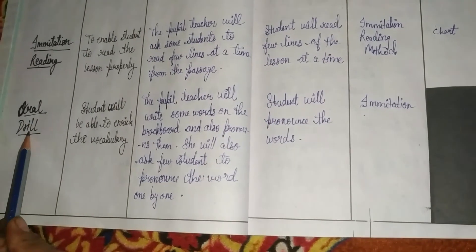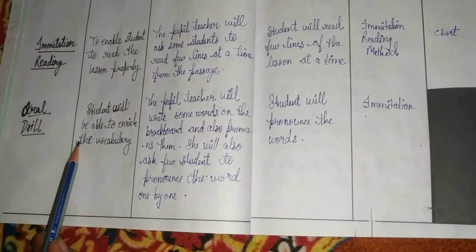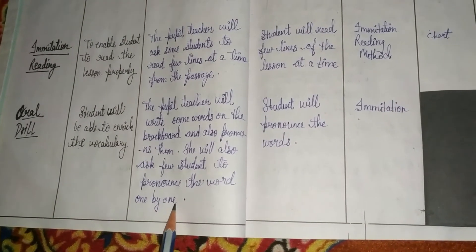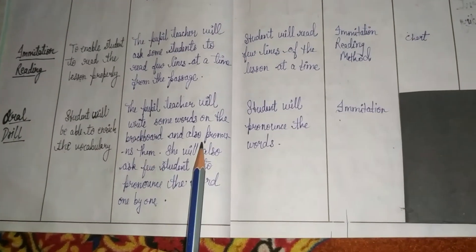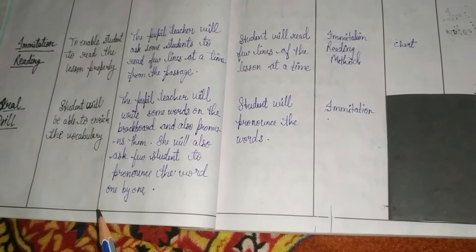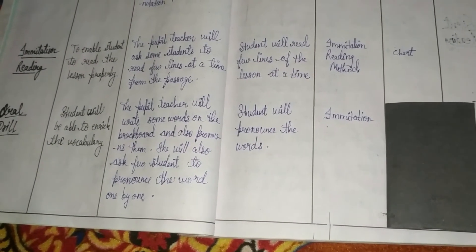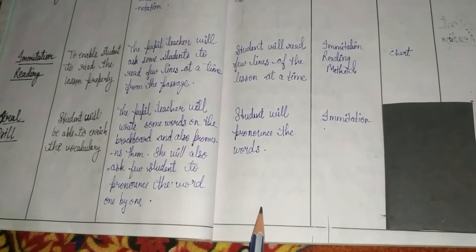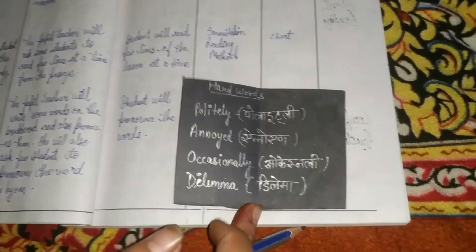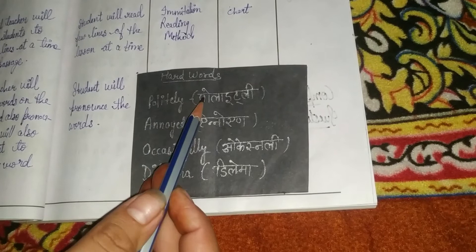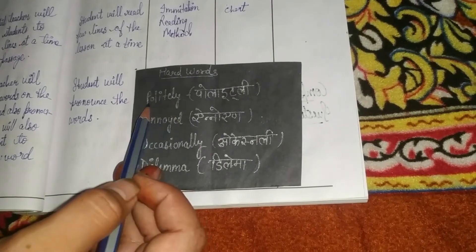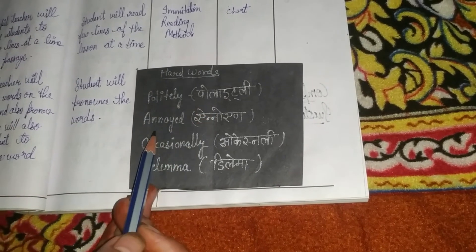Next comes oral drill. In oral drill, the aim is to enrich the students' vocabulary and help them correct their pronunciation. The teacher will write some words on the blackboard and pronounce them. She will also ask a few students to pronounce the words one by one. During oral drill, she will ask the students to imitate the pronunciation. For example, words written on the blackboard — like 'politely' — will be written along with their Hindi meaning so students can read them correctly.